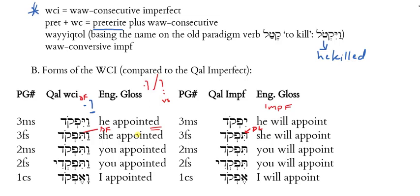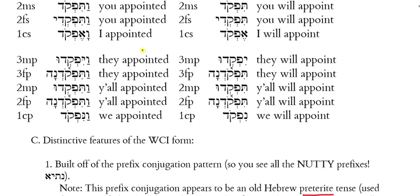Let's read the forms: vayifqod — 'he appointed'; vatifqod — 'she appointed'; vatifqod, vatifqadi — 'you appointed' masculine and feminine; vaʾefqod — 'I appointed.' For that first-person form, I'd normally want a patah and a doubling dot, but I can't put a dagesh forte in an aleph because aleph is a guttural, and gutturals don't take a dagesh forte. So when we reject that dagesh forte, the short 'a' vowel patah compensatorily lengthens and becomes a qamets.